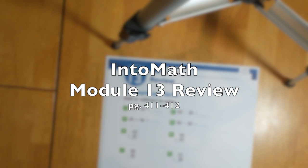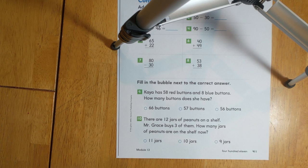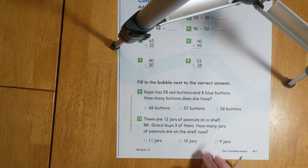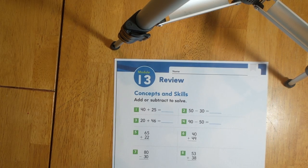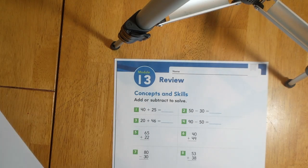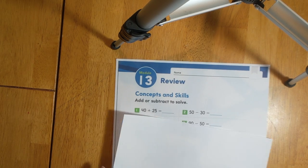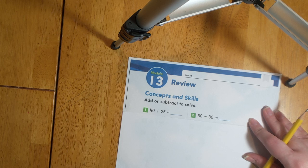Hello there first grade friends. In this video we are going to complete the module 13 review found on IntoMath workbook page 411 and 412. Let's go ahead and get started. I'm going to recommend that you grab an extra sheet of paper, just a plain one, that you can show your work on. Plus it will help you keep track of where you are on your page.